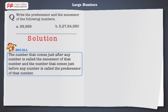Now let's solve the first problem. To find the predecessor of 99,999, subtract 1 from it. We get 99,998. Hence, the predecessor of 99,999 is 99,998.